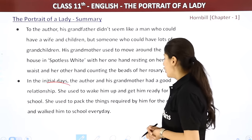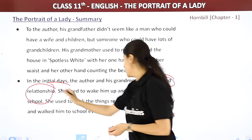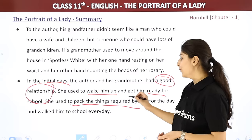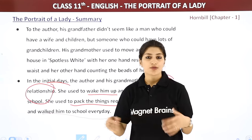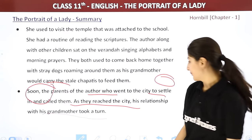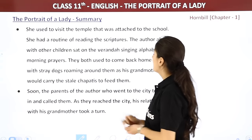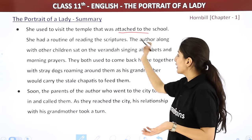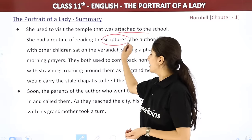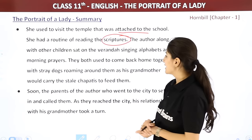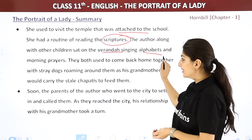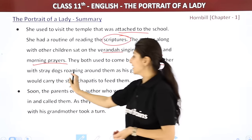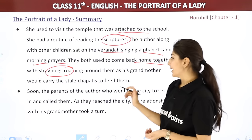In the initial days, the author and grandmother had a very good relationship. In the morning, she used to visit the temple attached to the school. She had a routine of reading scriptures. The author, along with other children, sat in the verandah and recited the alphabets and morning prayers. They both used to come back home together, and the grandmother would feed stale bread to stray dogs along the way.